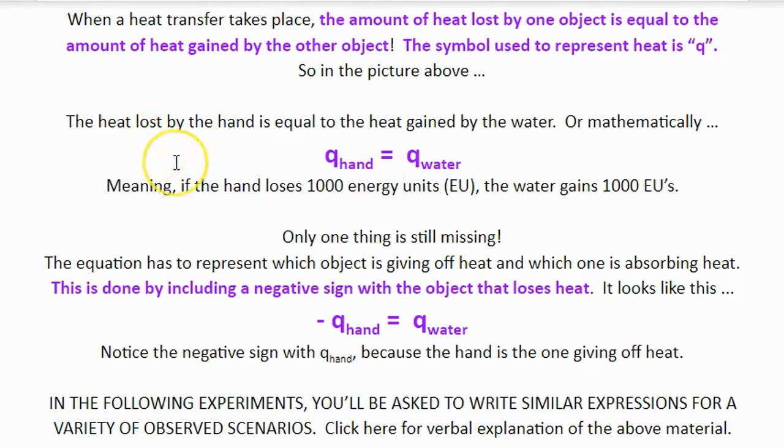So there's only one thing still missing, and that is when you write one of these q equals q expressions, you also have to include a negative sign that indicates the direction that the heat is flowing. The convention we use in science is that the negative sign should always be listed next to the object that is losing heat.